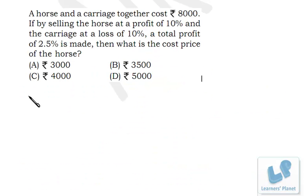A horse and a carriage together cost rupees 8000. If by selling the horse at a profit of 10% and the carriage at a loss of 10%, a total profit of 2.5 percent is made, then what is the cost price of the horse? This problem can be solved very easily by the method of allegation.